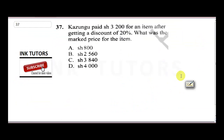Question 37: Kazongu paid 3,200 shillings for an item after getting a discount of 20%. What was the marked price? A discount is the amount removed from the original price — a concession where the seller reduces the actual price by a certain percentage.